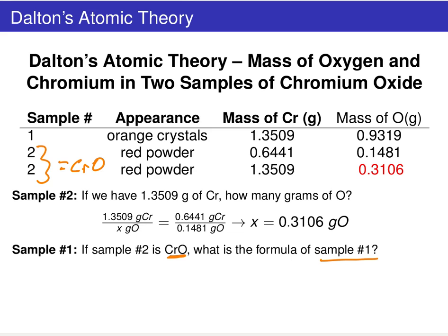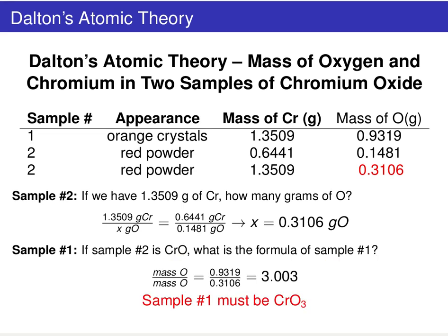What we're going to rely on is the data from the first and third lines. We've got a mass of chromium that is actually constant between the two samples — there's the same amount of chromium present.